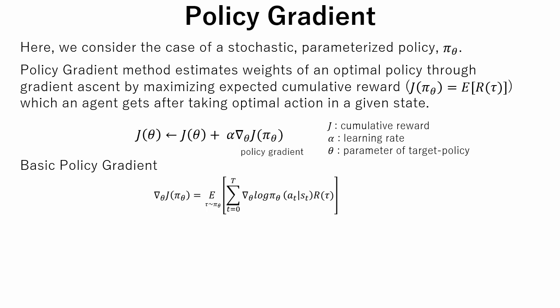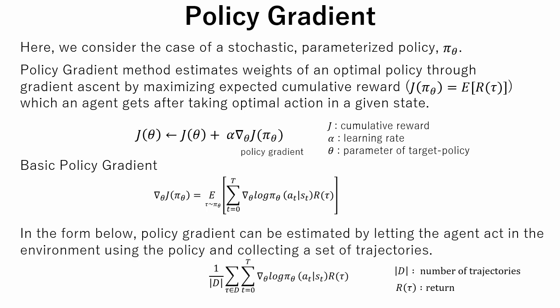After several expression transformations, we can get this formula. This is basic policy gradient. In this form, policy gradient can be estimated by letting the agent act in the environment using the policy, and collecting a set of trajectories. This is the simplest version of the computable expression.